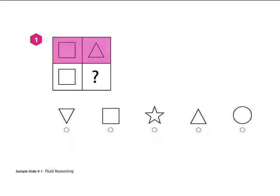Looking across, we have a square and a triangle at the top, so we need a square and a triangle on the bottom.